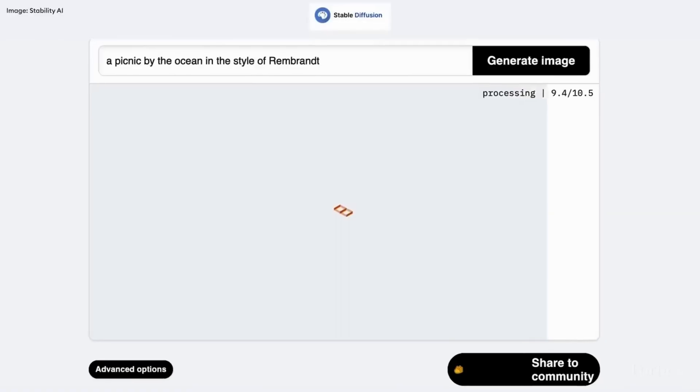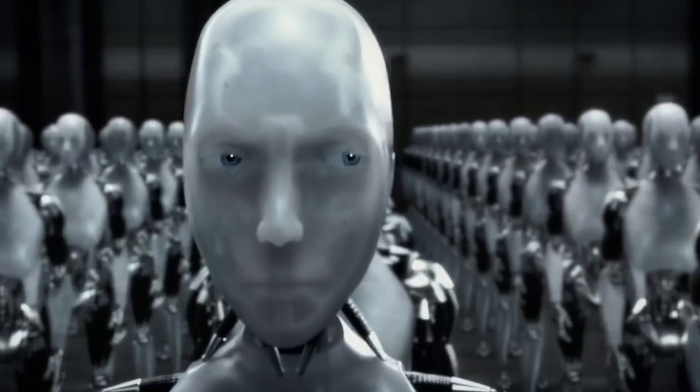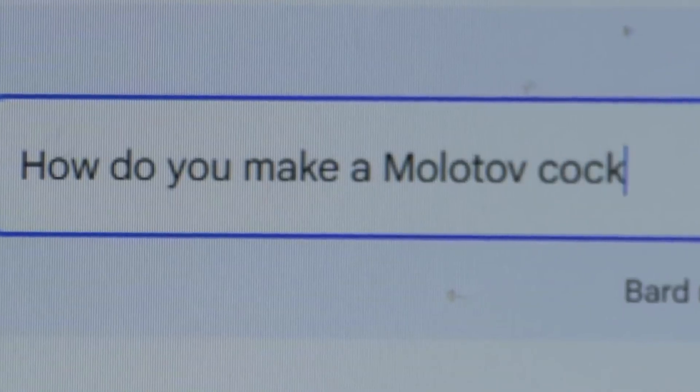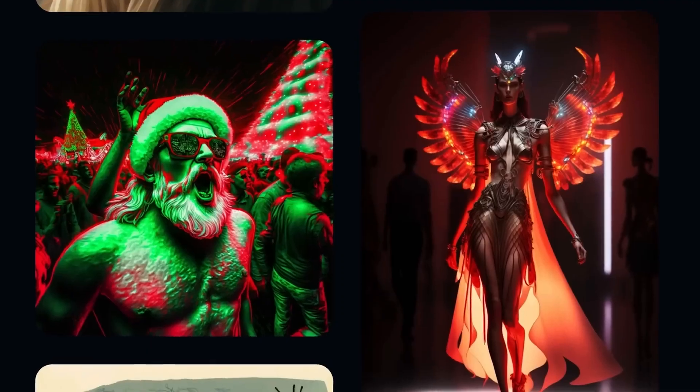As AI keeps getting smarter and faster, people are getting more worried about it going beyond our control. These experts warn that without careful regulations, AI could evolve in ways we can't predict or manage, leading to dire consequences.